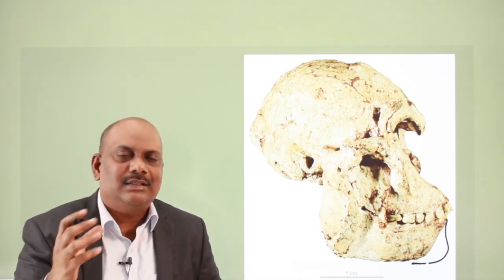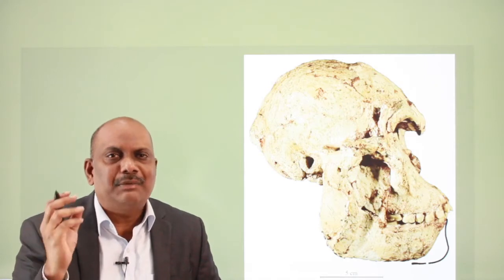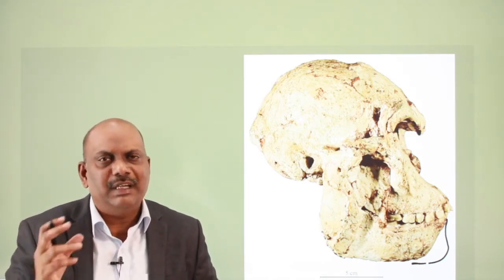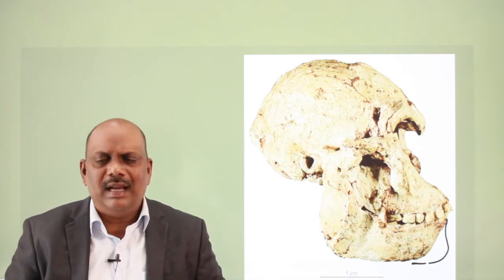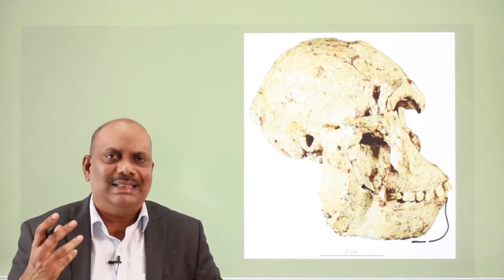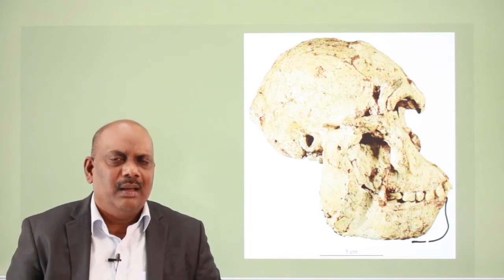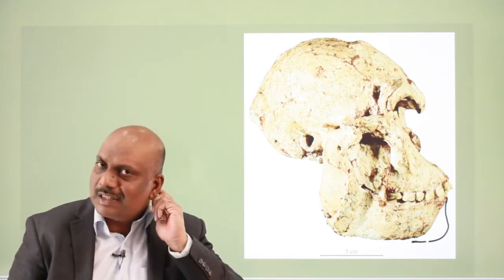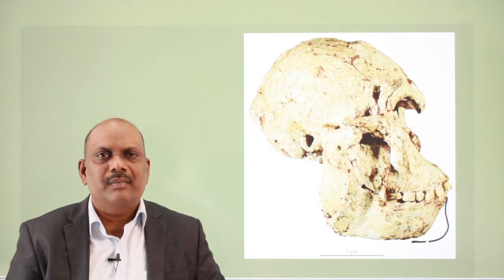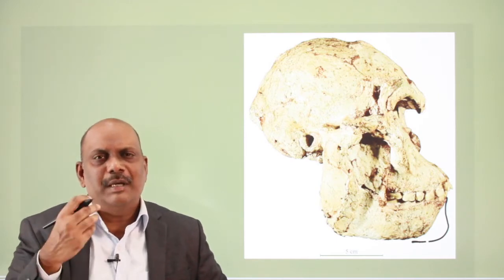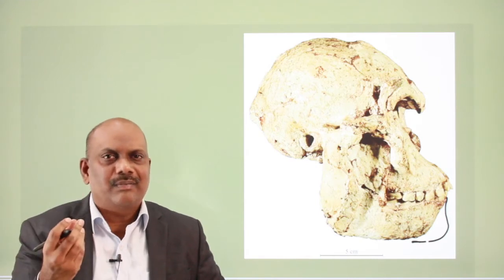It is only from Neanderthals that the chin started developing. So absence of chin is a very important primitive character of most apes. With the course of time, when our ancestors like Homo habilis and Homo erectus started eating processed food, the need for a huge jaw declined. The jaw became thinner and thinner in the course of evolution — thinner but stronger.